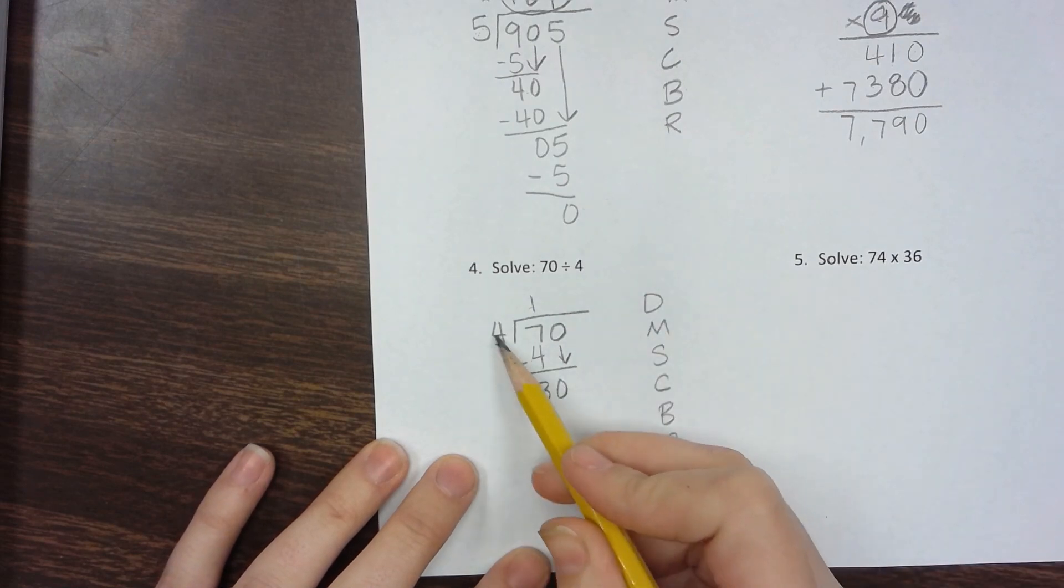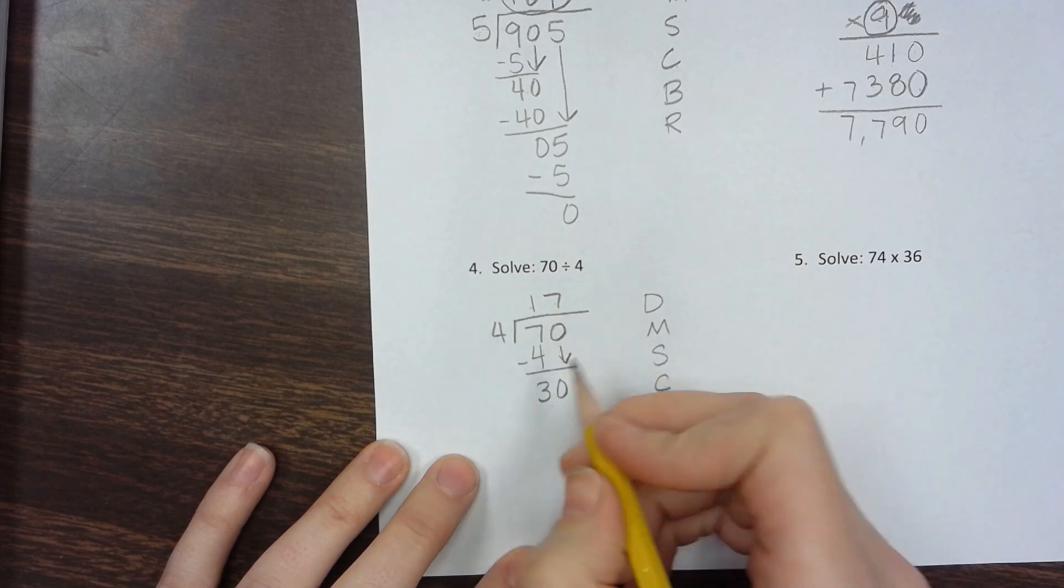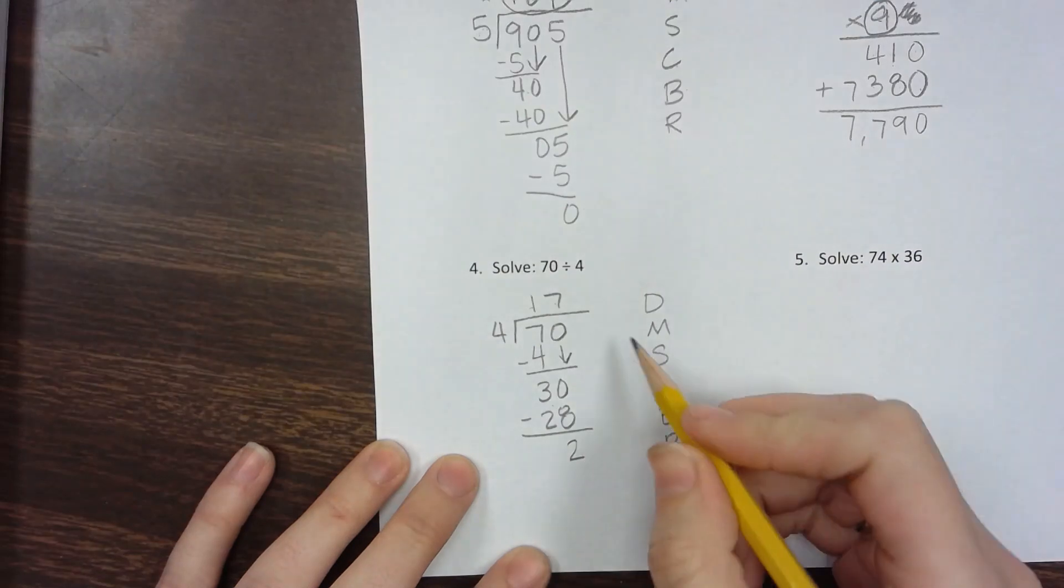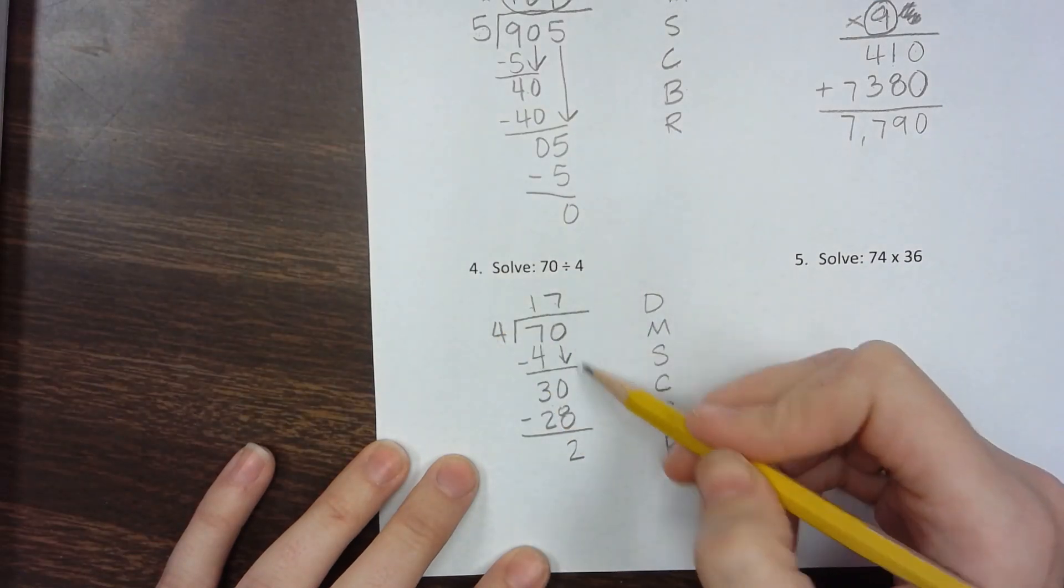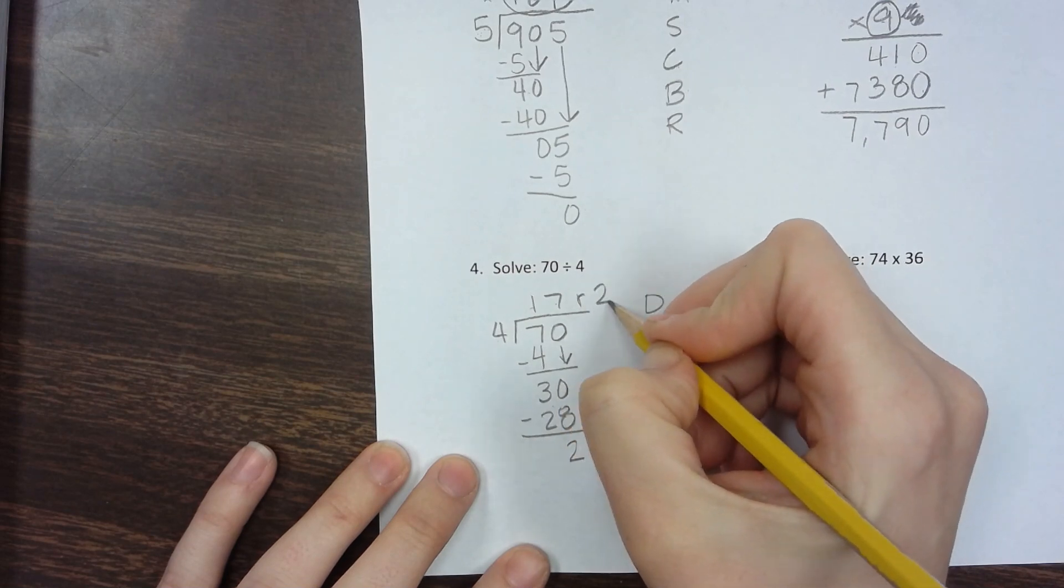4 goes into 30 seven times. 7 times 4 is 28. Subtract and get 2. It's smaller than 4, but there's nothing else to bring down, so the remainder is 2.